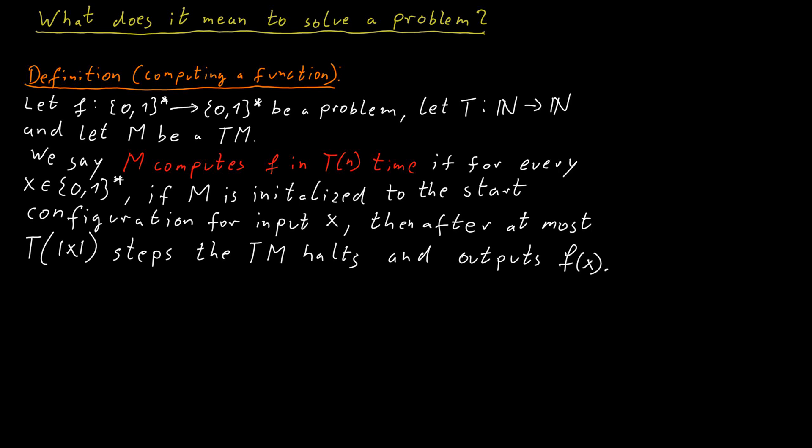So if we give x as an input to the Turing machine, the Turing machine will run for a limited number of steps and then will have produced the correct output f(x).